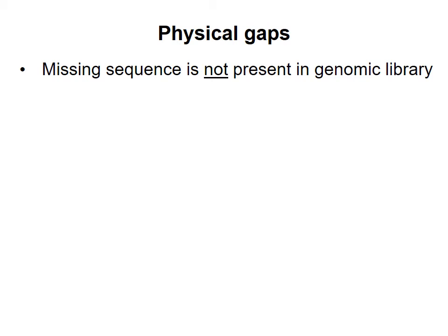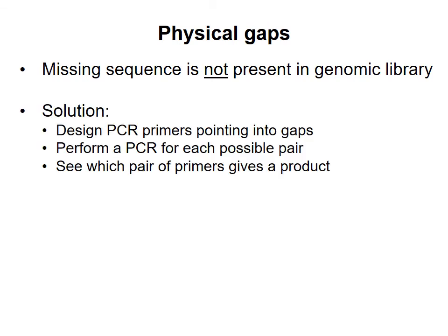To fill in a physical gap, the researchers decided to use PCR. They designed PCR primers complementary to each end of the remaining contigs and pointing into the gaps. They then did PCR reactions using every possible combination of the PCR primers, using genomic DNA as the template. If the primers were close enough to generate a PCR product, then the researchers concluded that the corresponding contigs were next to each other in the genome. They sequenced the PCR product to fill in the physical gap.